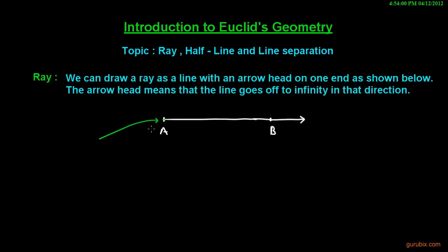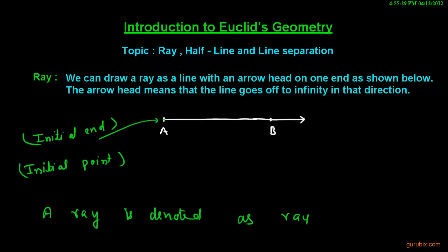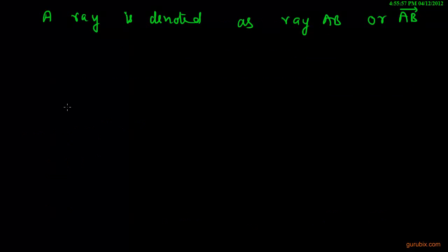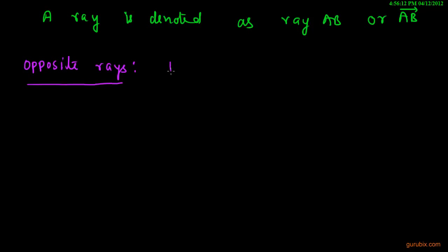This point is called initial point, or this end is called initial point. And a ray is denoted like this: ray AB or AB.